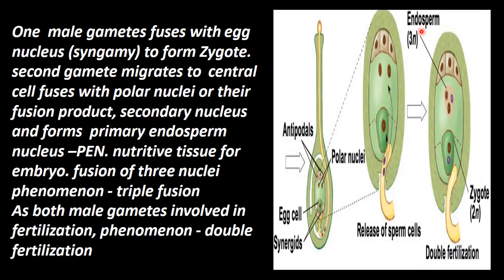The primary endosperm nucleus is triploid. The zygote, however, is diploid.